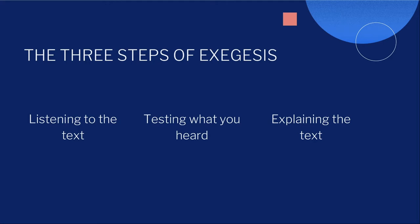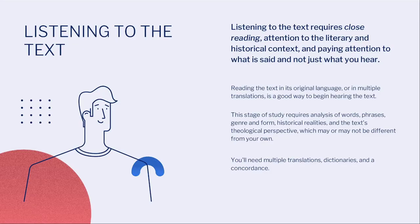Let's talk about that first step of listening to the text. Listening requires a close reading and attention to the literary and historical context. This is crucial in allowing us to pay attention to what is actually being said, not just what we hear. Have you ever been in a conversation where the other person interprets what you said in a totally different way? That's the problem of the speaker and the listener — what gets lost in translation. The first step of exegesis is attuning to the text and paying attention to what it actually says rather than what we think it says.